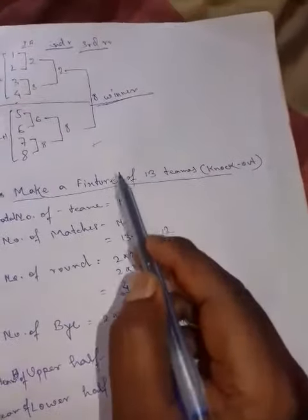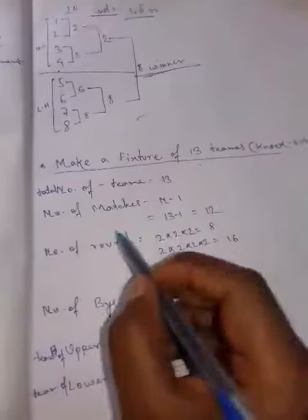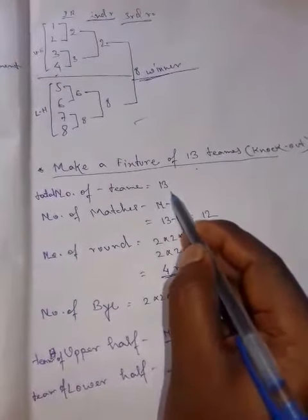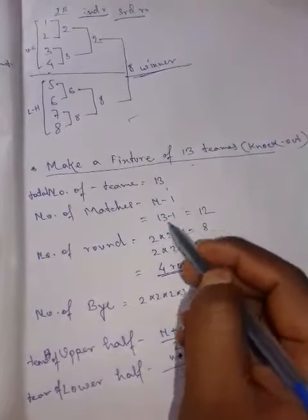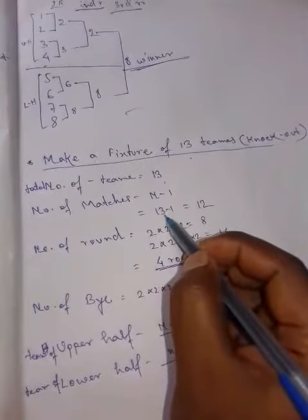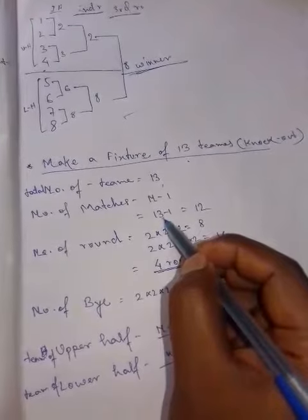First, we try to make a fixture of 13 teams. Total number of teams is 13. Number of matches, the formula is n minus 1. Number n is equal to 13, total number of teams minus 1 equals total matches, which is 12.